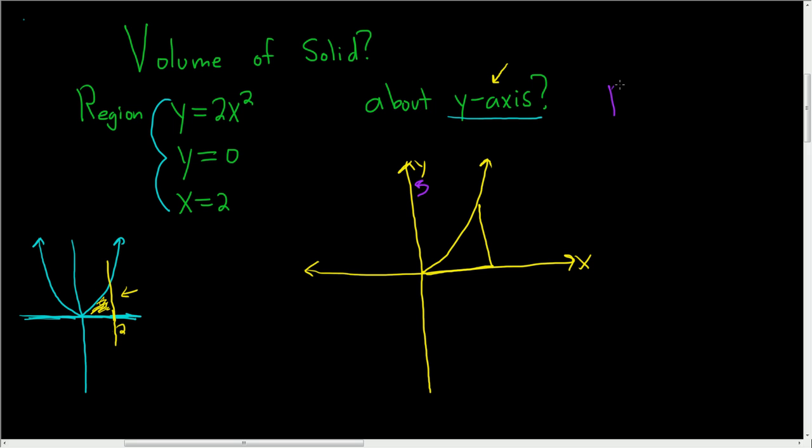Whenever you're using the disk method, which is what we'll use in this video, you want to make sure that your rectangles are perpendicular to the axis of revolution. So this is called the axis of revolution, the y-axis. So when we draw our rectangle, the only way to draw it is like that.